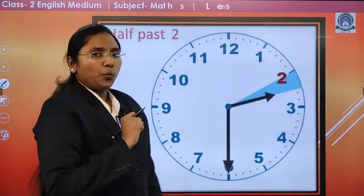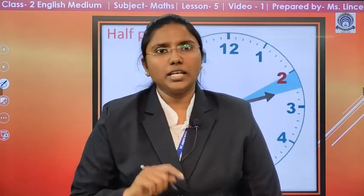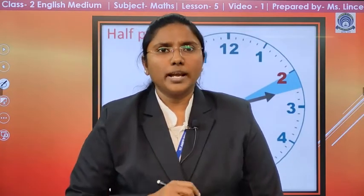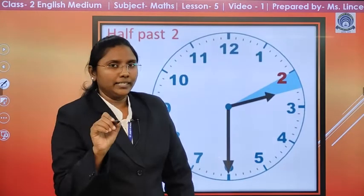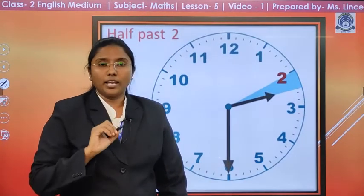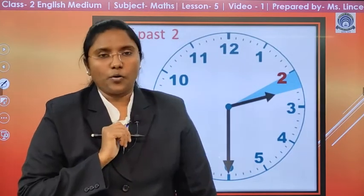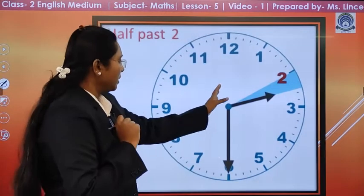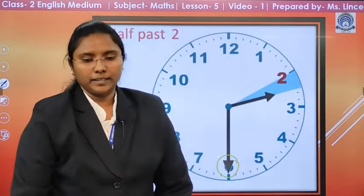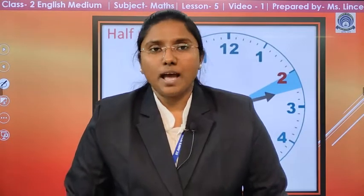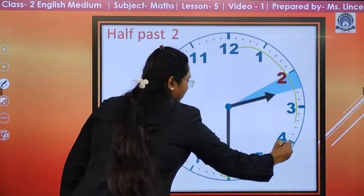Now, Varun's school time is 7 o'clock and he reached school at 7.30. Now, when we calculate it, he is late by 30 minutes. Now, when the minute hand is on 6, the clock shows half an hour, that is, 30 minutes.